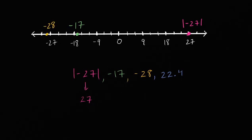And then finally we have 22.4. So let's see, we have 18, 21, 22 would be here, so 22.4 is going to be roughly right over there. So that is 22.4.